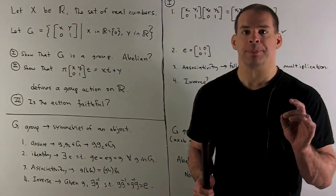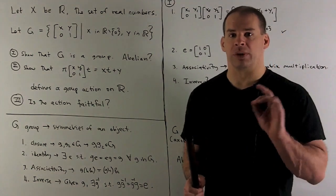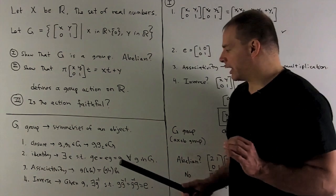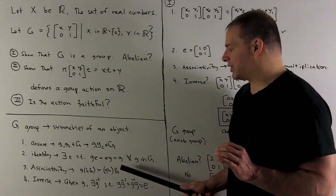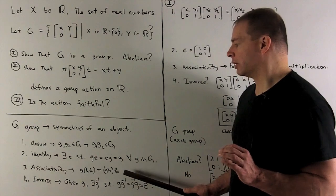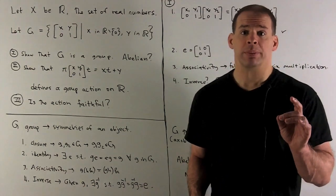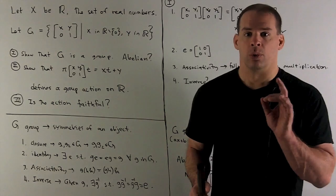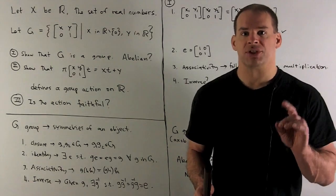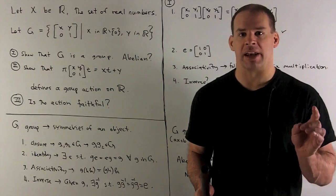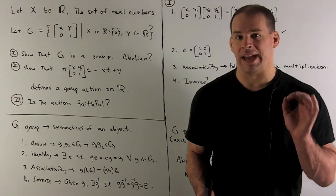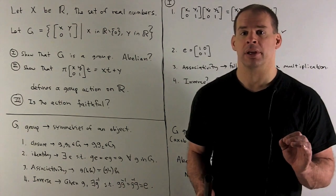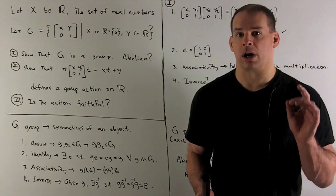For associativity, we're asking if we take any three elements in G, can we break up the product in two different ways and get the same answer? For inverse, if you give me a G in our set, we're looking for another element such that if I multiply G times that element in either order, we get the identity back.